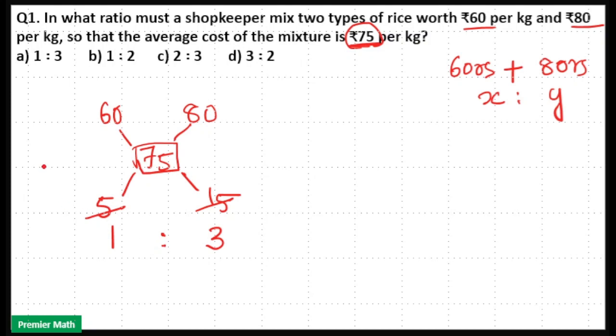So 1 is to 3 is your answer. Option A is your answer. Here the shopkeeper has to mix ₹60 rice and ₹80 rice in the ratio 1 is to 3.